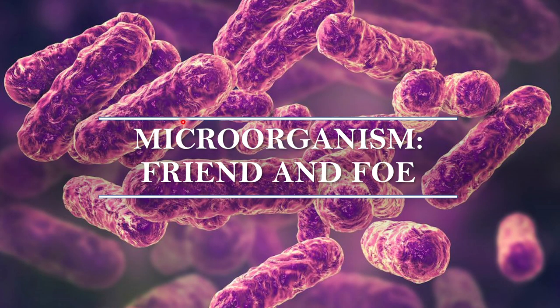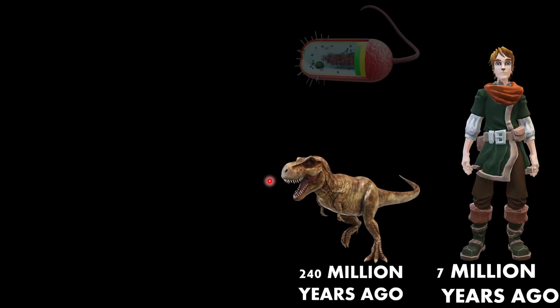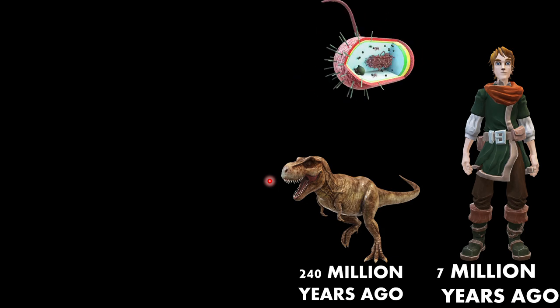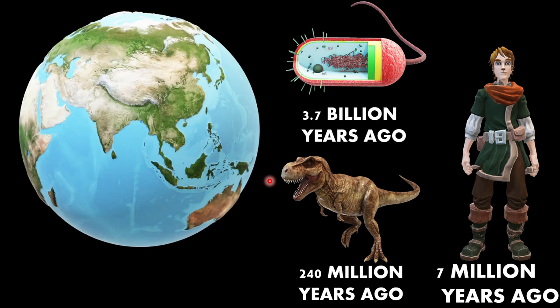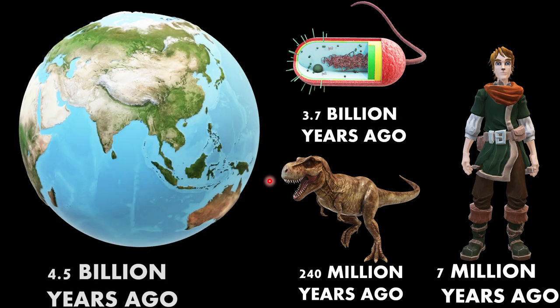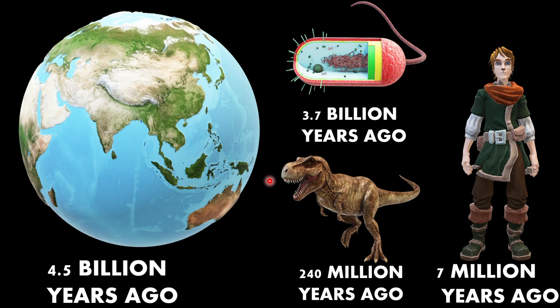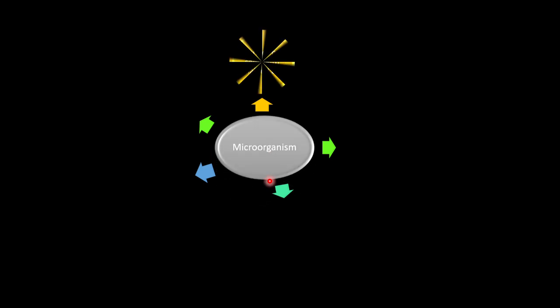Let's get to the point and start the chapter: Microorganisms — Friend and Foe. Microorganisms existed not only before human beings but before dinosaurs too. Microorganisms evolved 3.7 billion years ago, and the Earth formed 4.5 billion years ago — isn't that amazing?